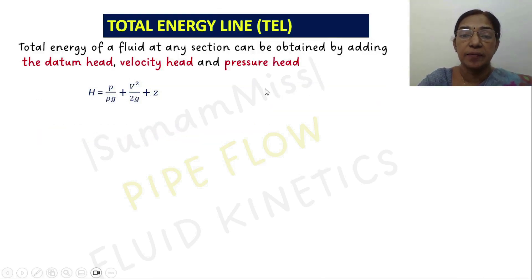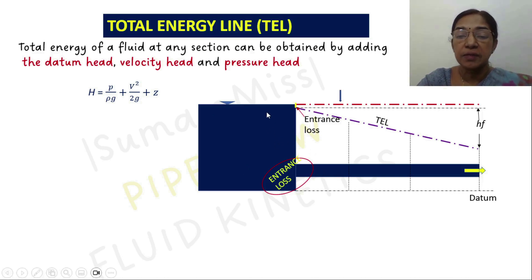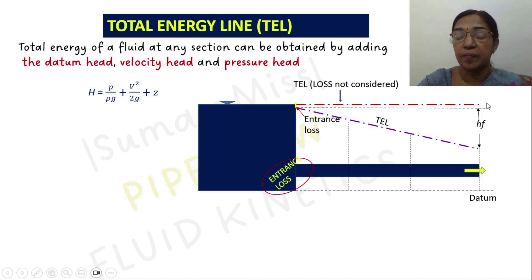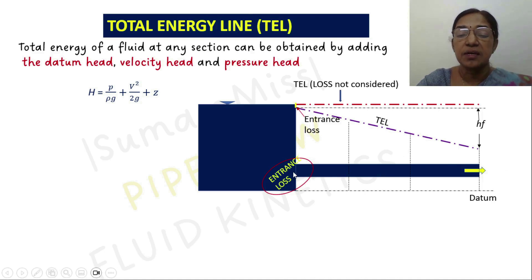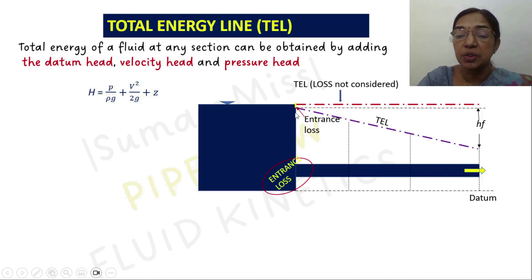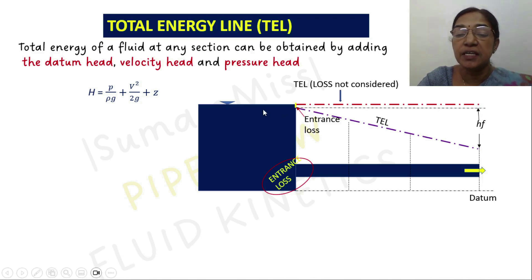Now let us see how we can draw the total energy line. In this figure you can see that a pipe is drawing water from the tank. If there is no loss accounted, the total energy line coincides with this red dotted line. But here the flow is entering a smaller pipe and exiting outward. The flow through this pipe is affected by entrance loss and friction loss. We calculate the entrance loss and mark it here, so the total energy drops from the tank level to this point, then drops further downward due to friction losses. This amount indicates the friction loss, whereas this portion indicates the entrance loss.